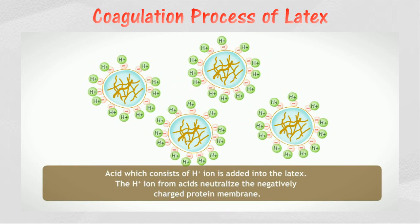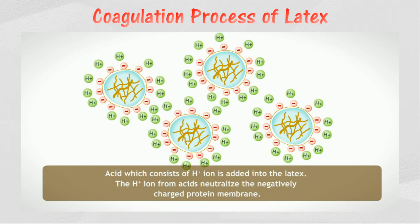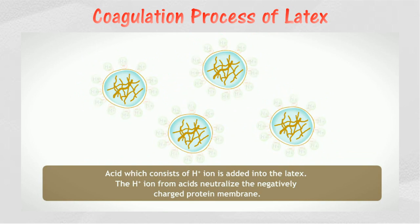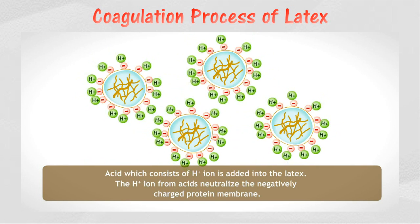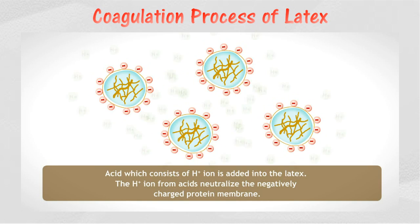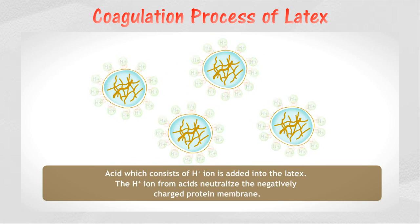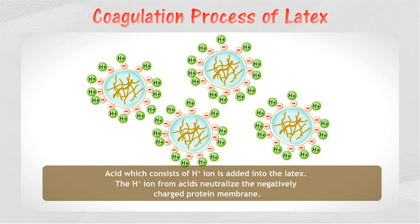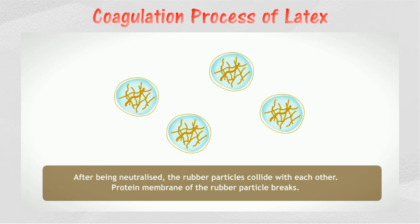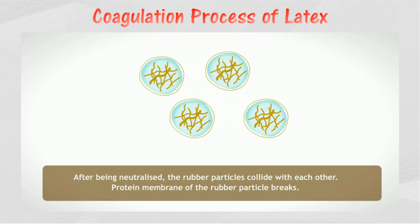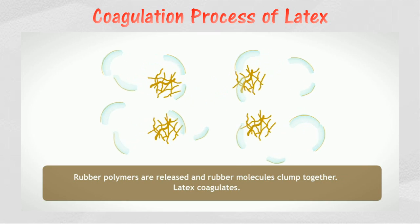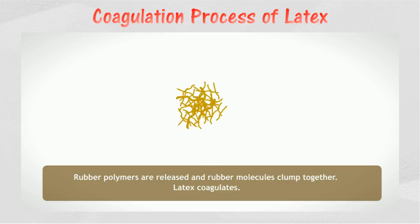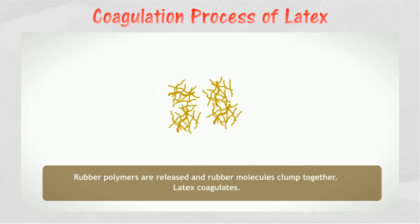Coagulation of latex can be done by adding acid to it, or by leaving it in the air for one to two days, due to the presence of acid produced by the action of bacteria. Positively charged ions from the acid neutralize the negative charges on the membrane of colloidal particles in natural rubber latex. Collisions between colloidal particles then break the membrane, and when membranes break, polymer molecules of rubber are released and combine with one another. This is known as the latex coagulation process.